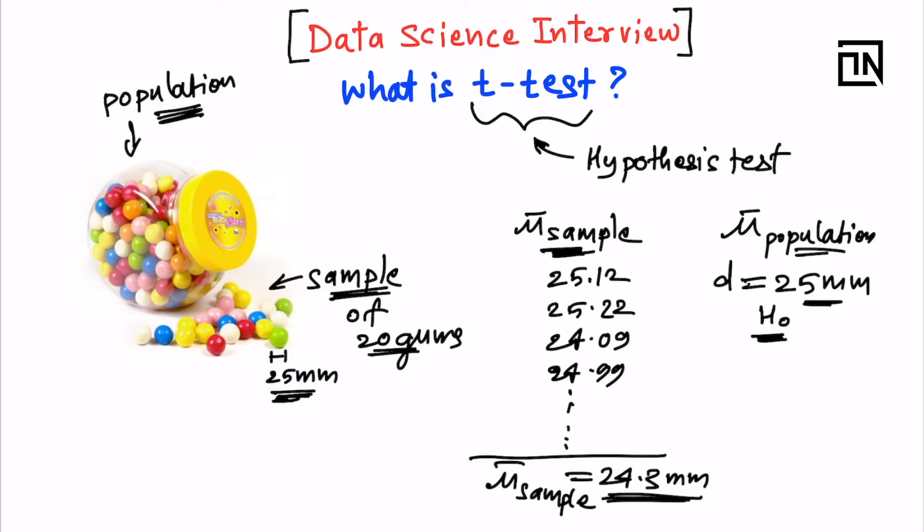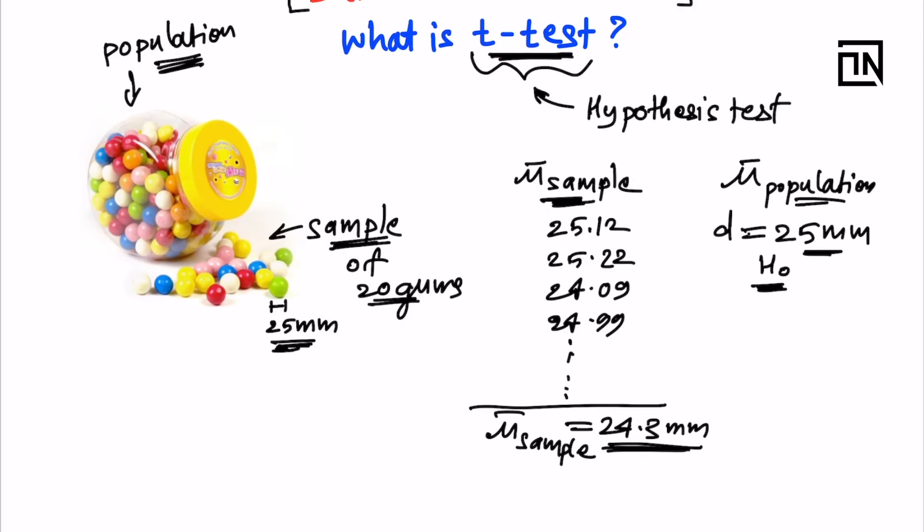Now statistically speaking, I need to check whether this 24.3 mm really belongs to this population or not. To test that, I'm going to use t-test. T-test is based out of t-distribution. A t-statistic is computed. To compute t-statistic, I need to also understand what the standard deviation of the sample is. For the sake of explanation, let me assume the standard deviation came out to be 0.1.